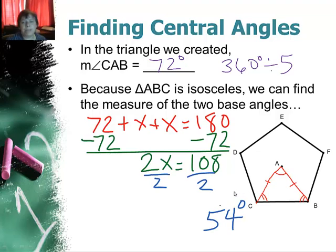Divide everything by 2 to get 54. So each of these angle measures are 54 degrees. So finding the central angle is actually 72 but it's also handy to find this extra angle down here.